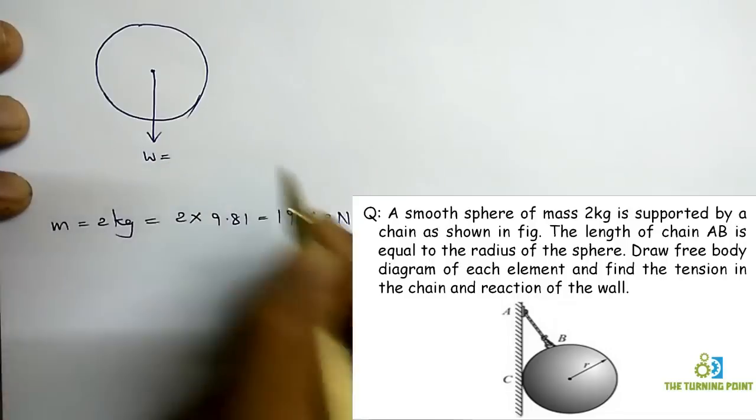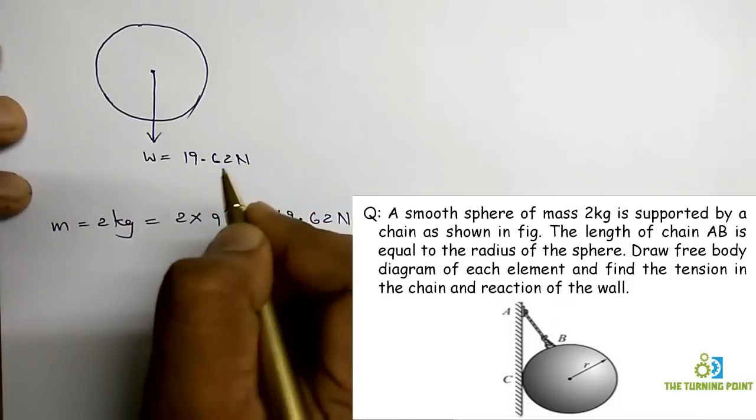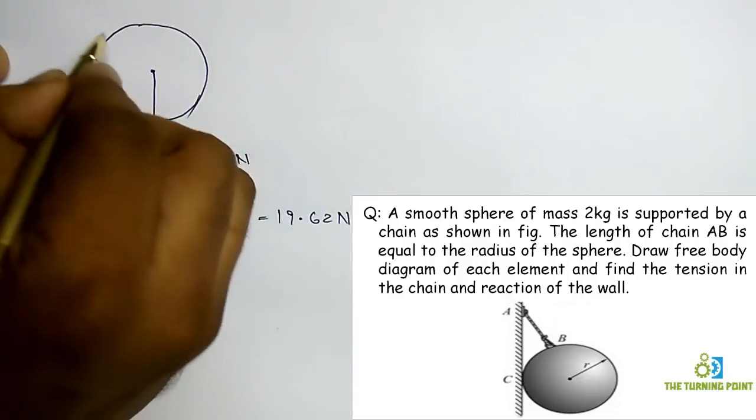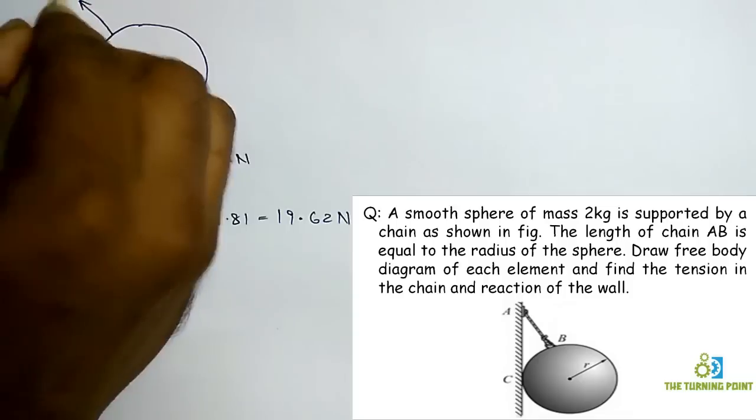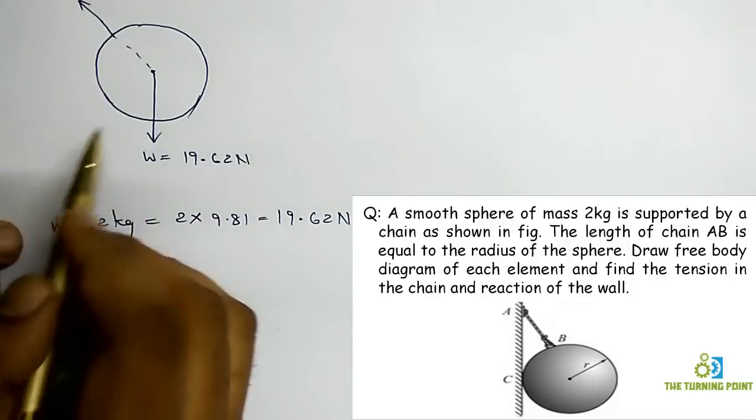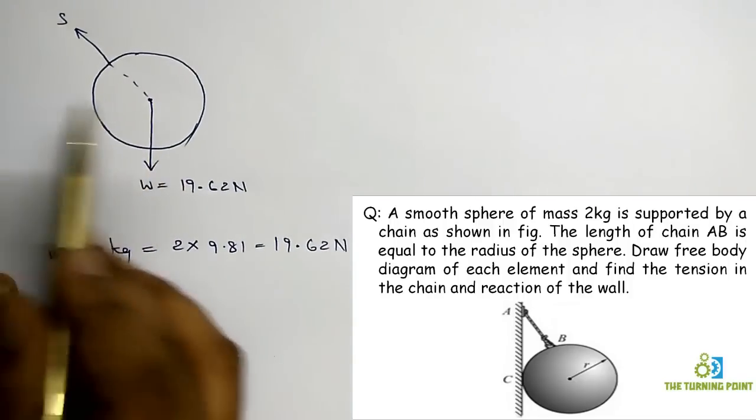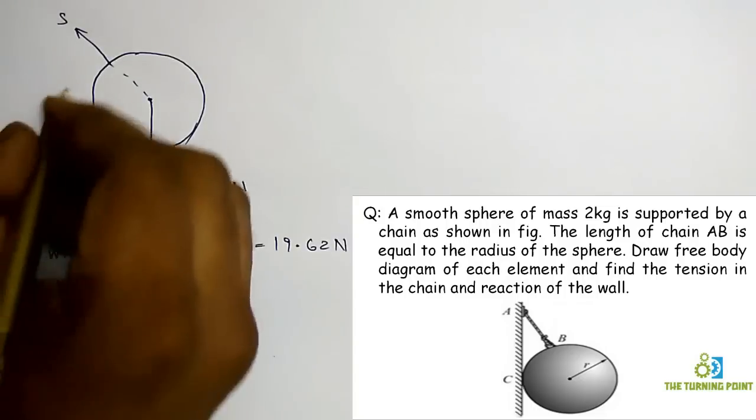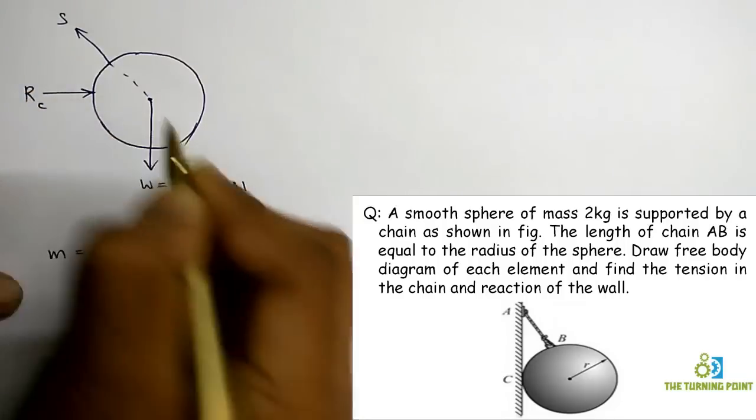Now we are going to represent the weight. So weight is 19.62 Newtons. And if you observe the string, string can experience only tensile force, that means AB can experience only tensile force. So here along this string there will be tensile force. If you extend that one it is going to intersect at the center. And if you observe this roller, this roller is not able to move in left hand side direction. Why? Because there is a wall. When there is a restriction you have to represent a reaction in the opposite direction perpendicular to surface. This is the reaction at C.